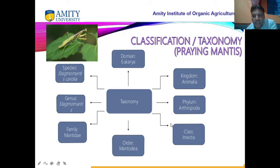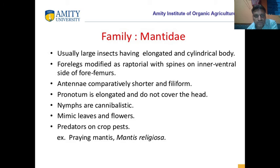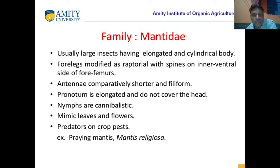Arthropoda — jointed appendages. Insecta — body is segmented. Mantodea — this is the order. Family is Mantidae. Genus is Stagmomantis, and the species can be different, like carolina — Stagmomantis carolina. Their body is cylindrical and elongated. They are raptorial — praying type — they can catch their enemies. Their antenna is short and filiform. Their pronotum is longer.